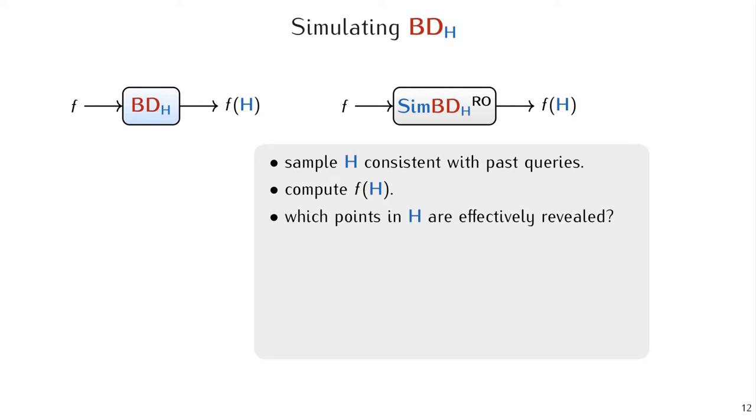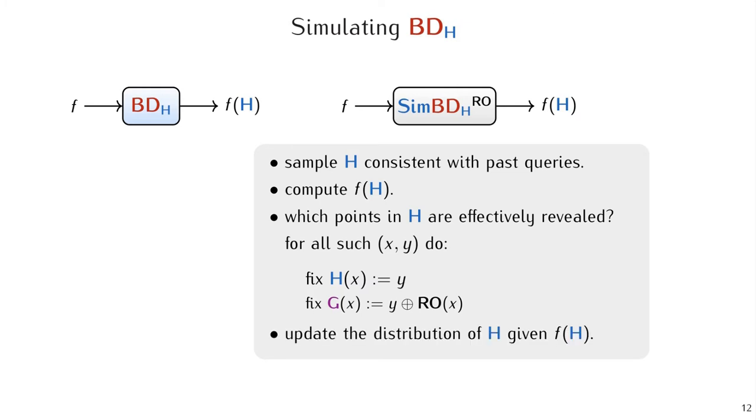Then the simulator basically needs to figure out which points in H are effectively revealed to the adversary because of this backdoor response. Then for all such points (x_i, y_i), they are fixed in H, and also for G they are set to Y_i XOR RO(x_i). Then we update the distribution of H given the backdoor response in order to be able to answer future backdoor queries. So, it remains to figure out which points are revealed and how to update the distribution of H.